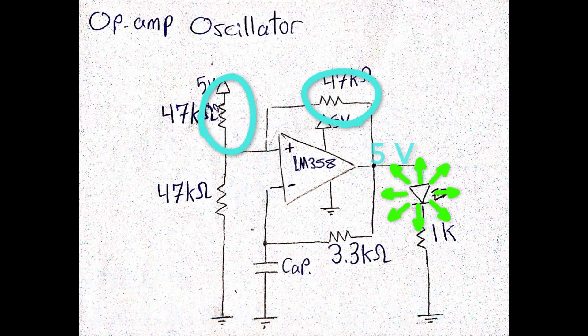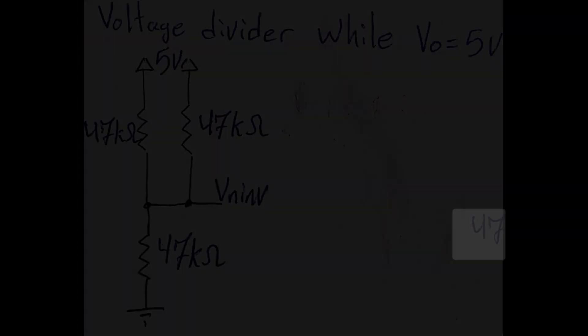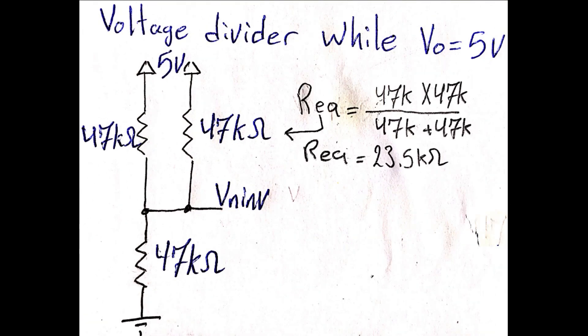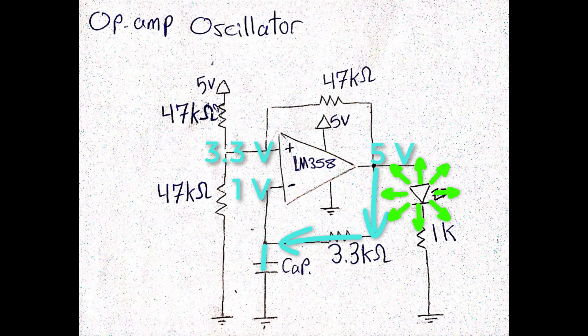Since these two resistors are pulled up to 5V, they are now connected in parallel. So now the voltage divider circuit will be like this. And since the pull-up equivalent resistance has changed, the non-inverting input voltage will be changed to 3.3V. So now the capacitor will start charging trying to reach 5V.